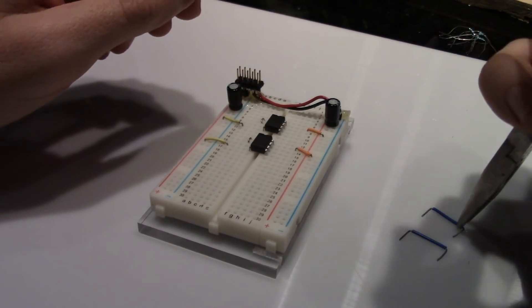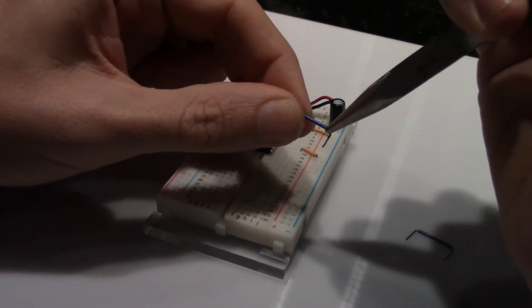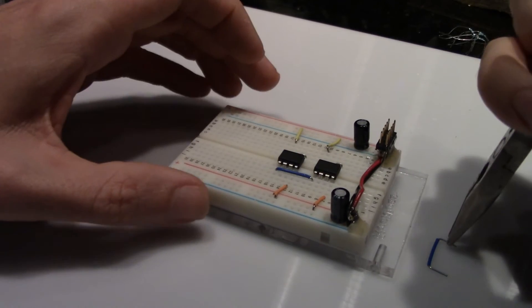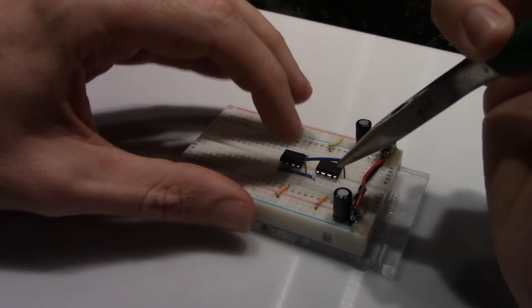Now place a jumper between the positive input of the op amps on the right side of the chips. Add another jumper from the positive input to an empty bus. This will make wiring at a later step easier.